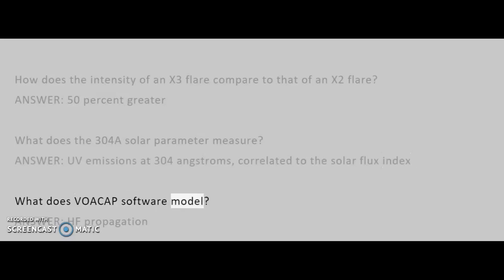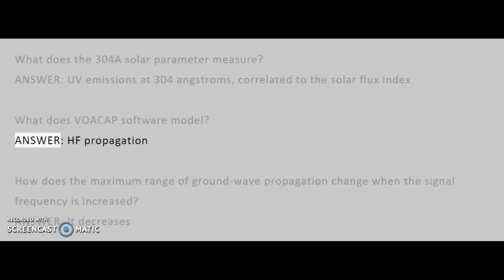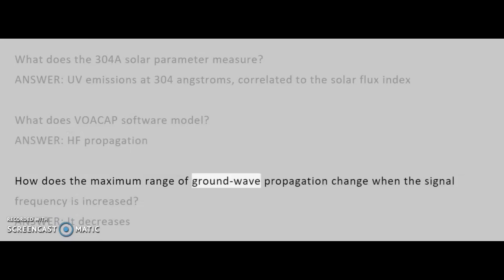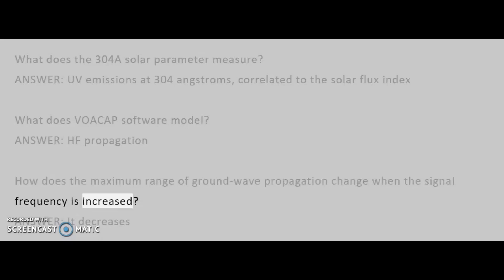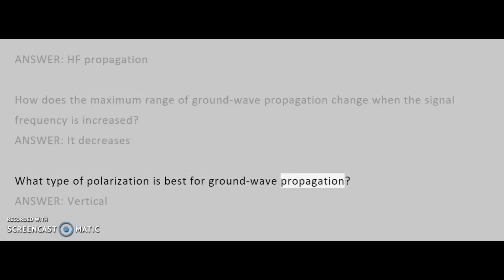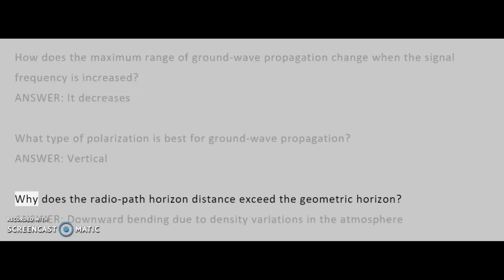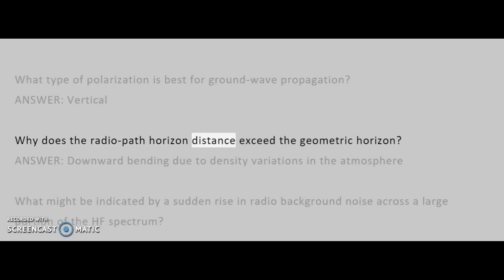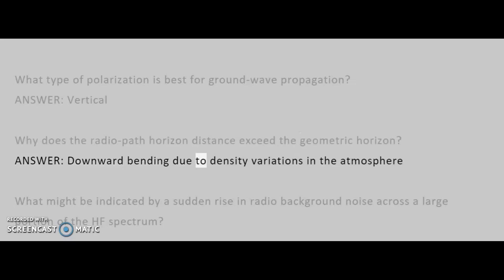What does VOACAP software model? Answer: HF propagation. How does the maximum range of ground wave propagation change when the signal frequency is increased? Answer: it decreases. What type of polarization is best for ground wave propagation? Answer: vertical. Why does the radio path horizon distance exceed the geometric horizon? Answer: downward bending due to density variations in the atmosphere.